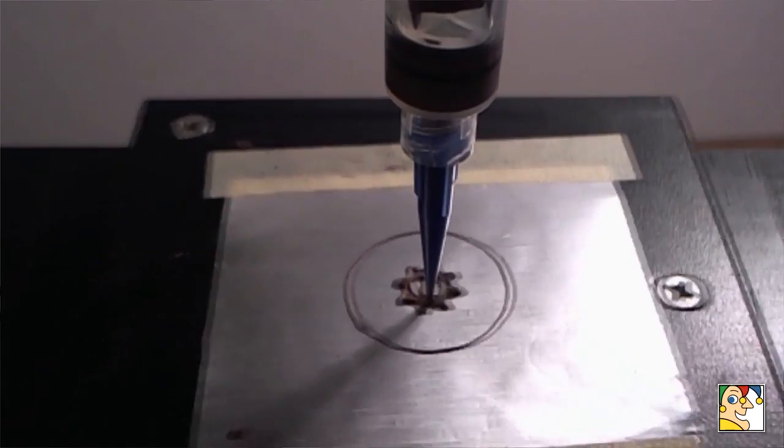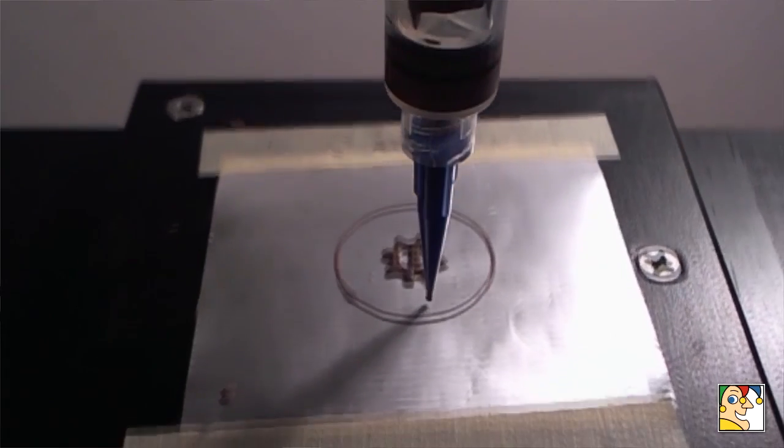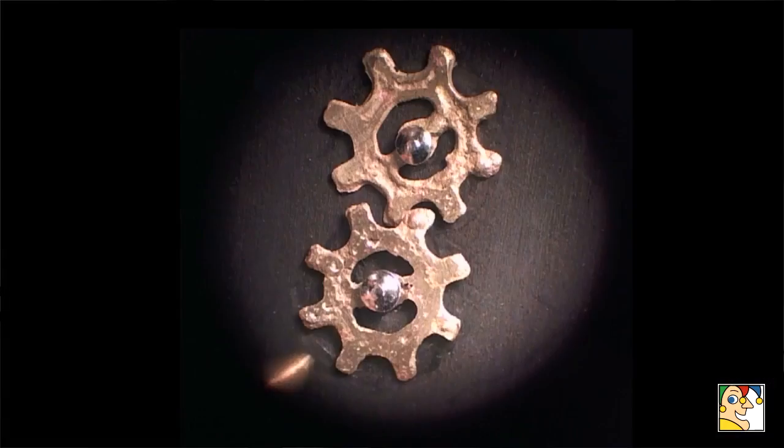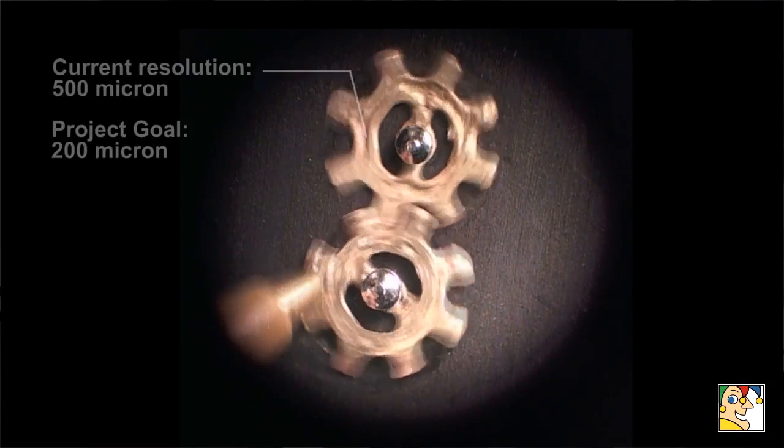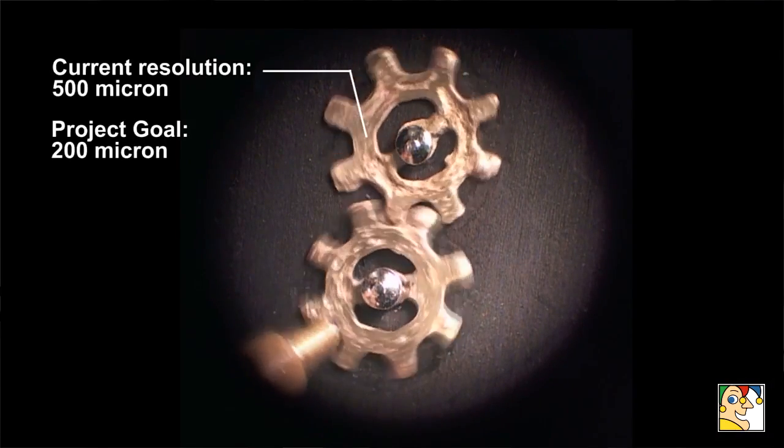So you print with a kind of clay, once it dries you can fire it in a kiln and it becomes a solid metal object. I recently filed a provisional patent for the high pressure metal clay extrusion system and some of the elements related to that.